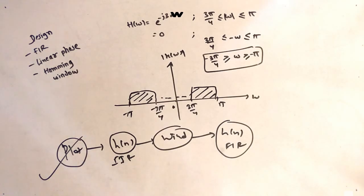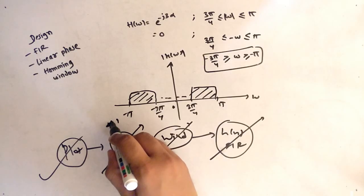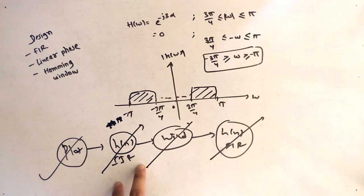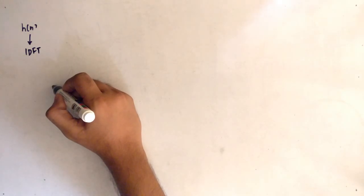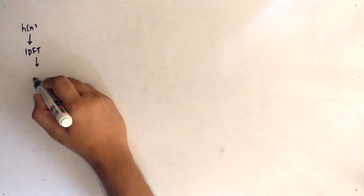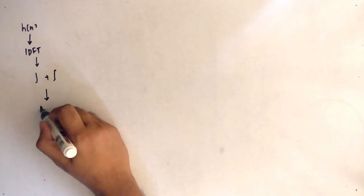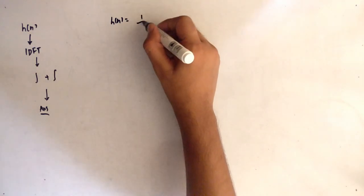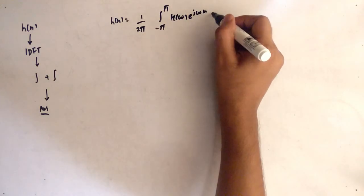Now we will find h(n) using the window trick. The basic idea is to obtain h(n) for IIR using the IDFT formula. We split the integral because we have two limits, and after solving we get the answer. So h(n) = 1/(2π) times the integral — that is the IDFT formula.